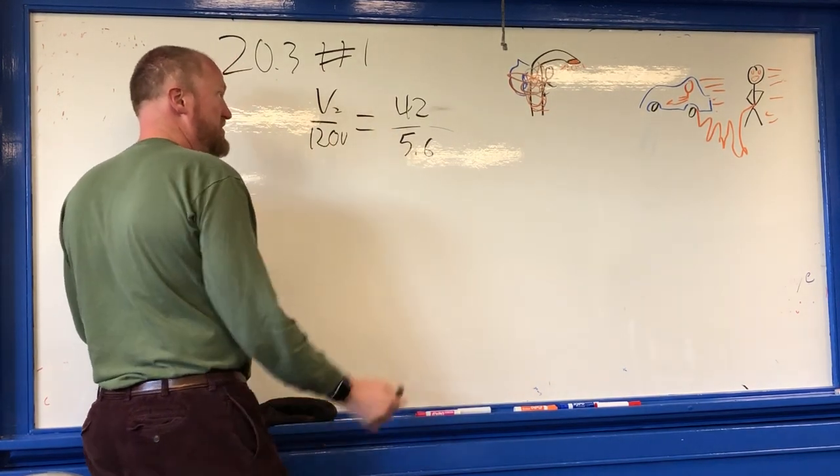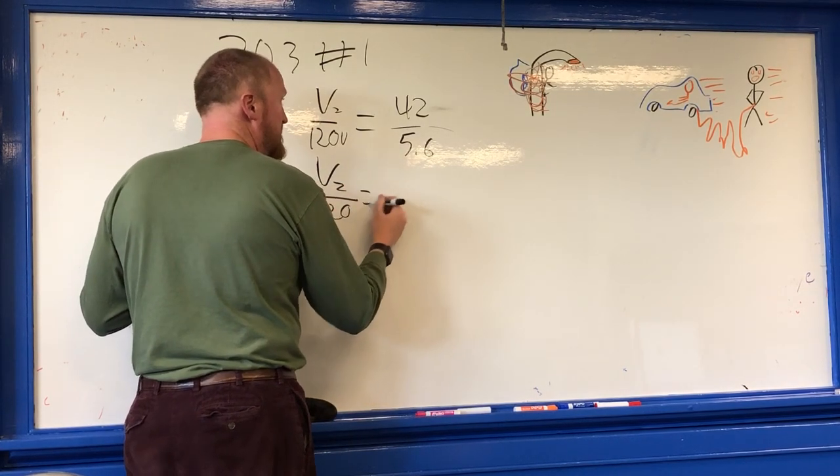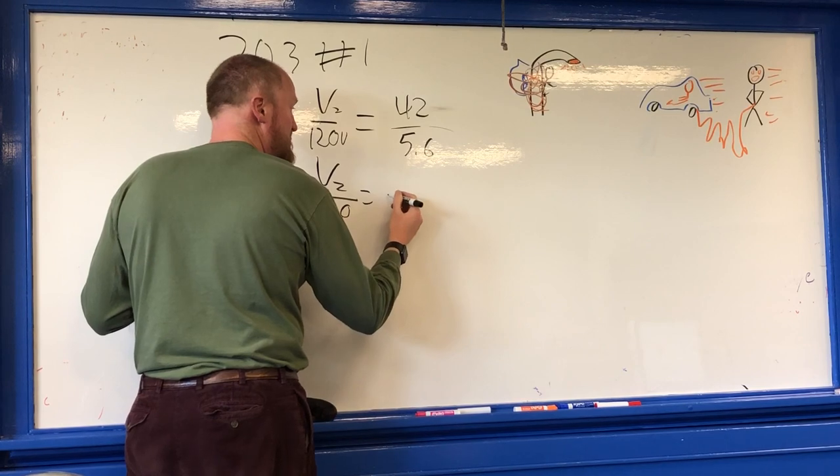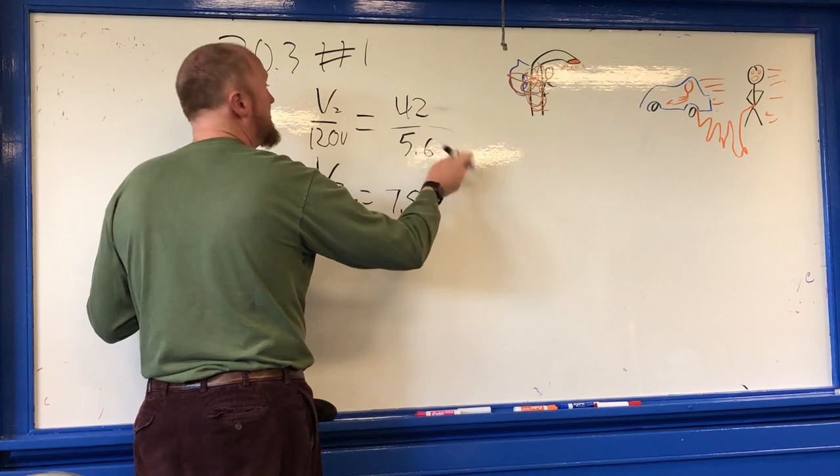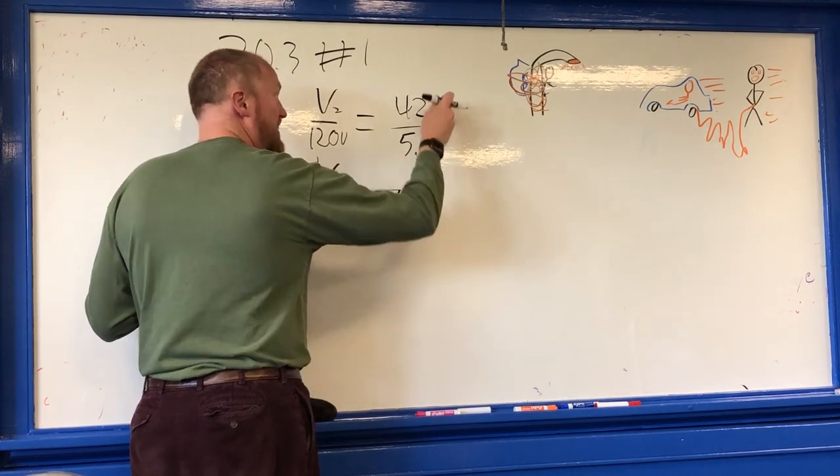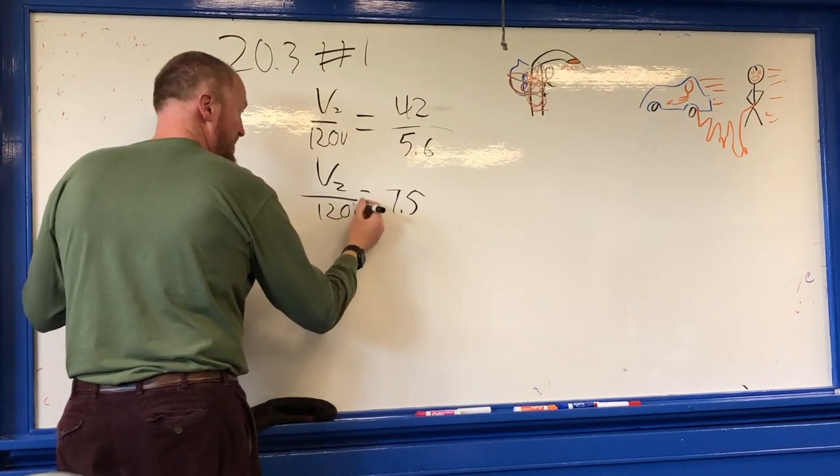So let's find that secondary voltage. So let's see, V2 over 120 is equal to 42 divided by 5.6 is equal to 7.5. Now, by the way, whether it's coils or meters per second or whatever you got the in units of, you got the same units on the top and bottom, they're going to cancel out, so it's just 7.5.